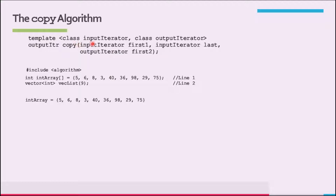The template has class InputIterator and class OutputIterator, with output iter copy. The parameter first specifies the position from which to begin copying the elements. The parameter last specifies the end position. The parameter first2 specifies where to copy the elements. Therefore, the parameters first and last specify the source, and first2 specifies the destination. Note that the elements within the range first to last minus one are copied. The definition of the function template copy is contained in the header file algorithm, so you must include #include algorithm.